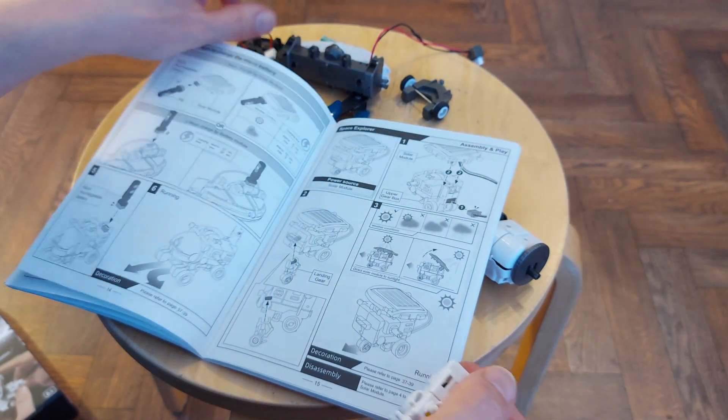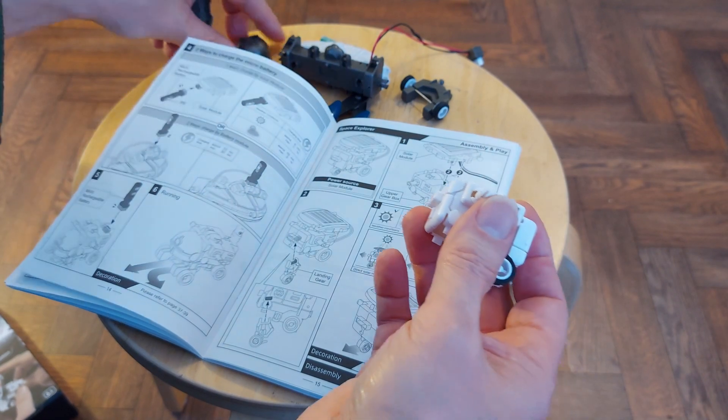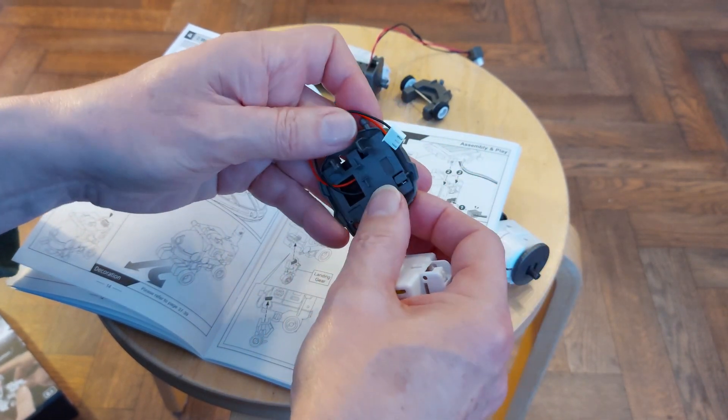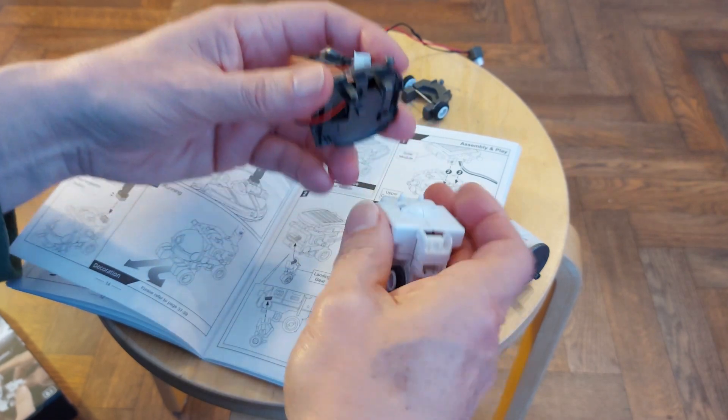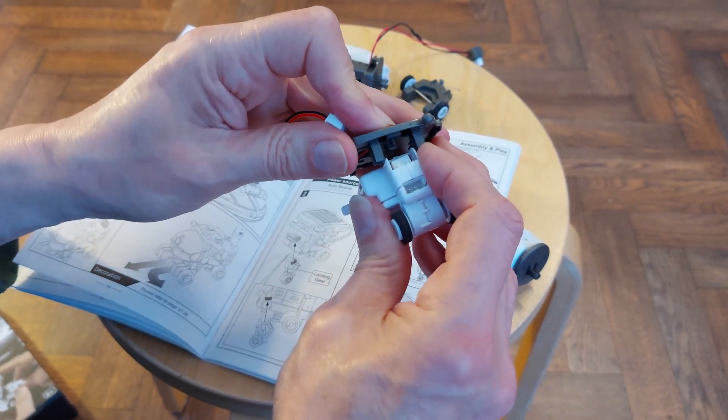Space Explorer needs the solar module on top. Oh, and it doesn't have the little face on the front. So that's going to go on there, clip in place.